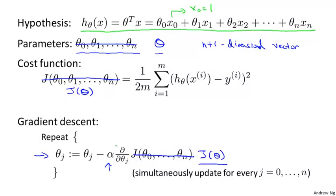Let's see what this looks like when we implement gradient descent. And in particular, let's see what that partial derivative term looks like.